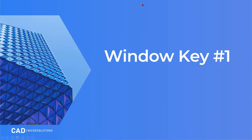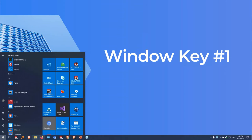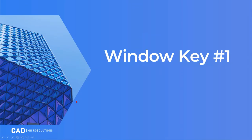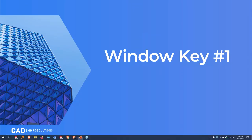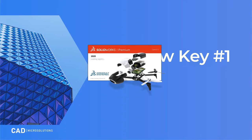Tip number one is the Windows key. In your taskbar, if you use Windows 1 through 9 it will open the first nine applications pinned there. So if I want to open SOLIDWORKS, I can press Windows 1 and it'll launch SOLIDWORKS — instead of having to use the mouse. A little shortcut right off the bat just to get started.